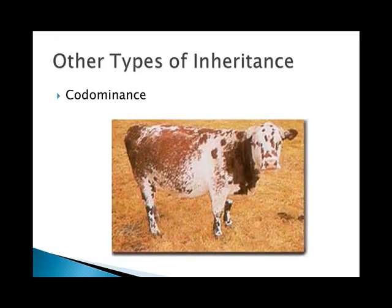In codominance — for example in cattle — red cattle crossed with white individuals produce roan offspring. Roan cattle aren't pink; they're red and white, showing both traits simultaneously.